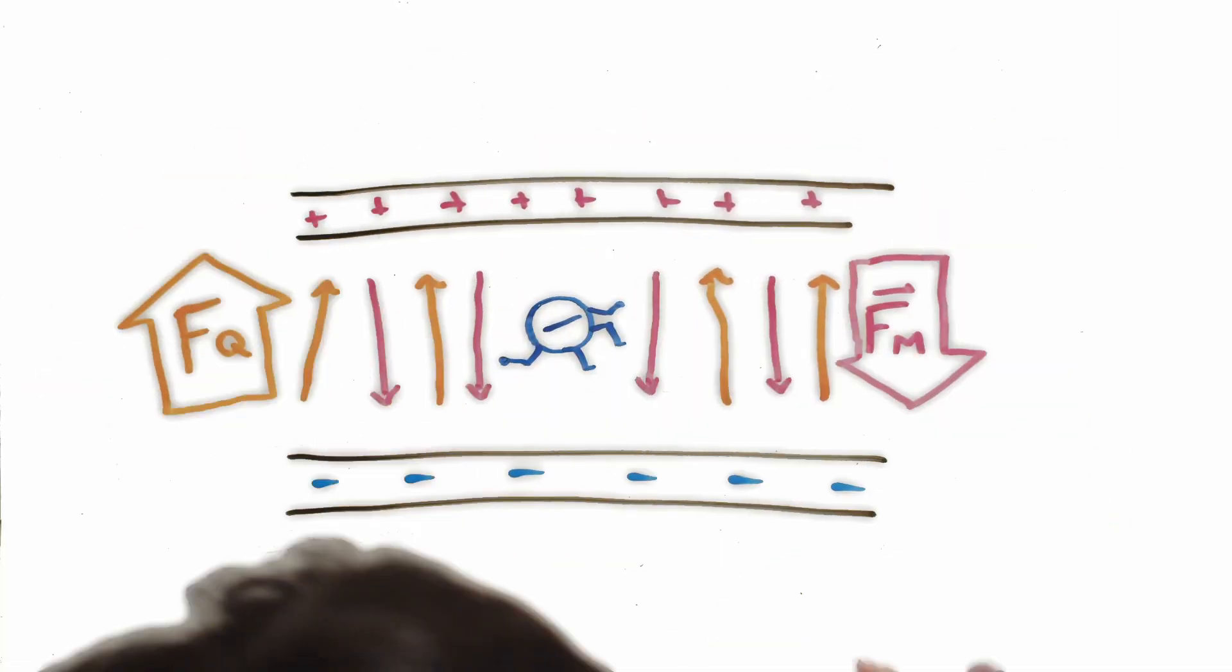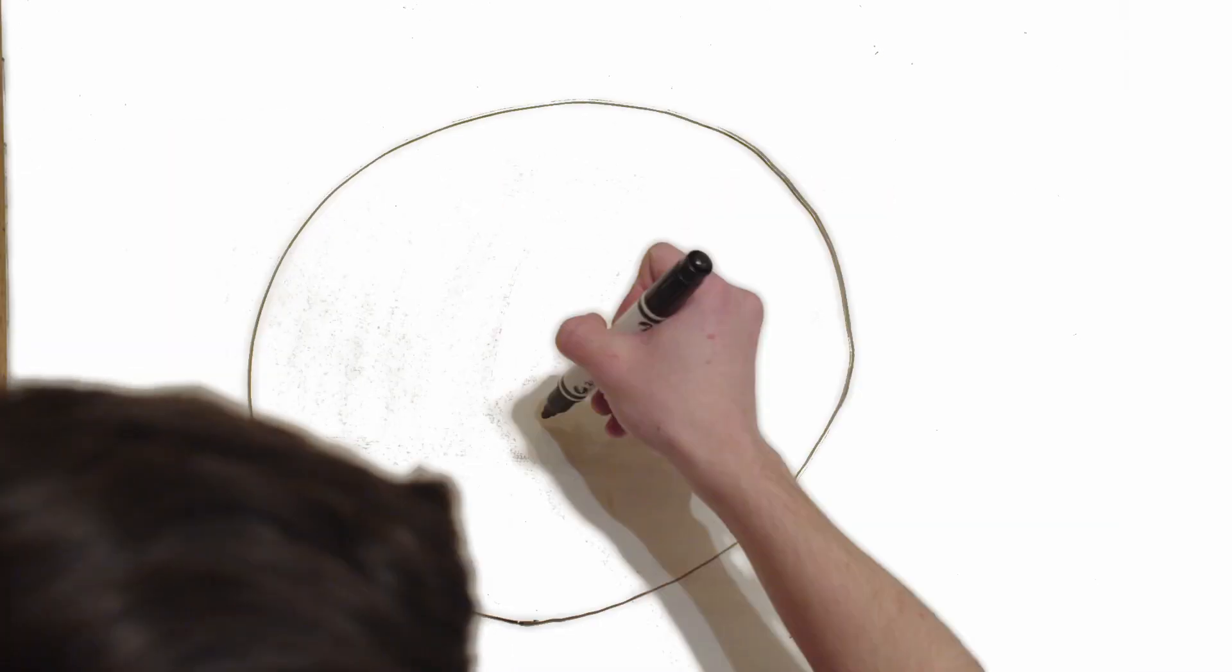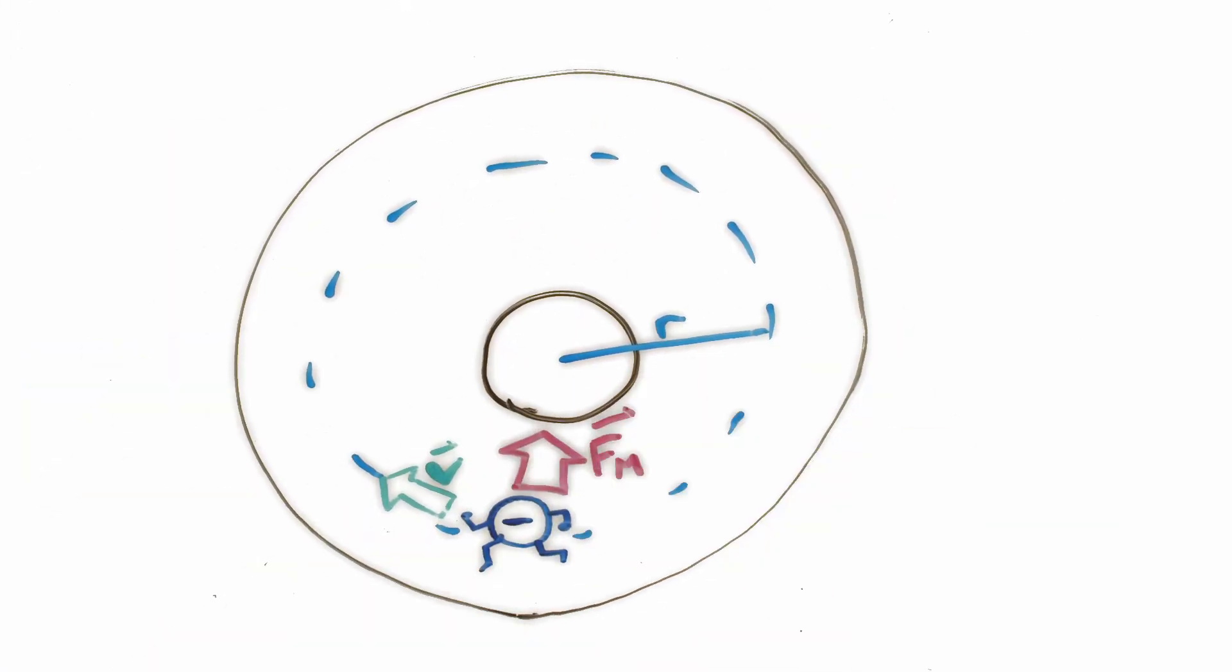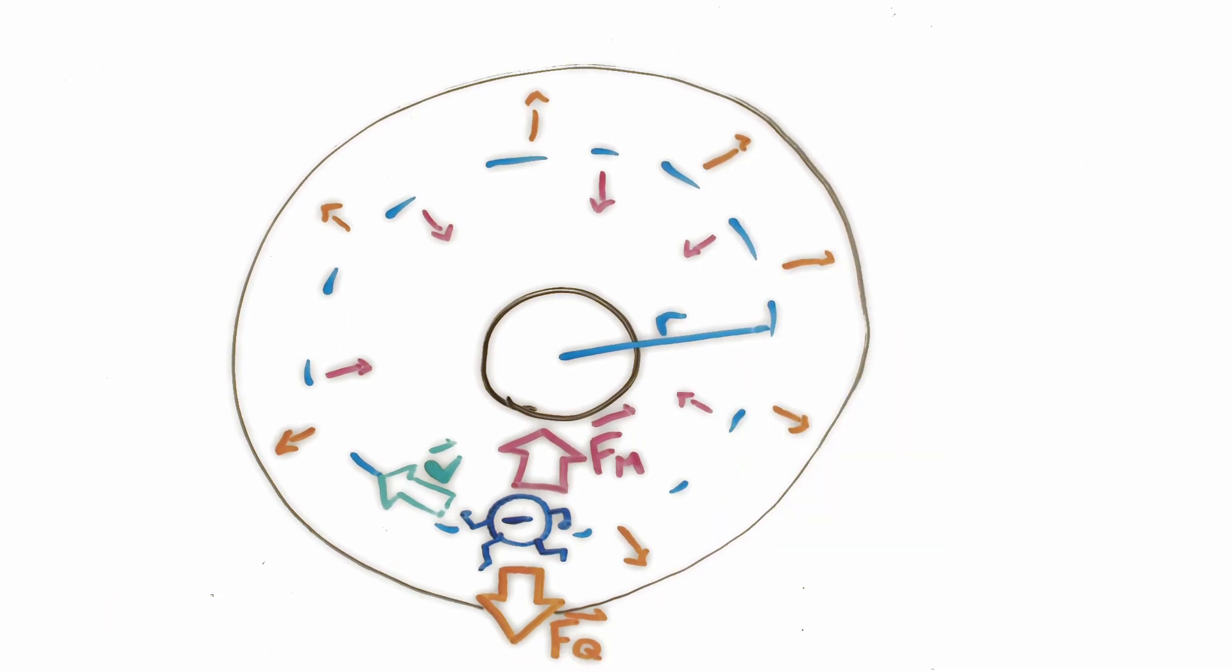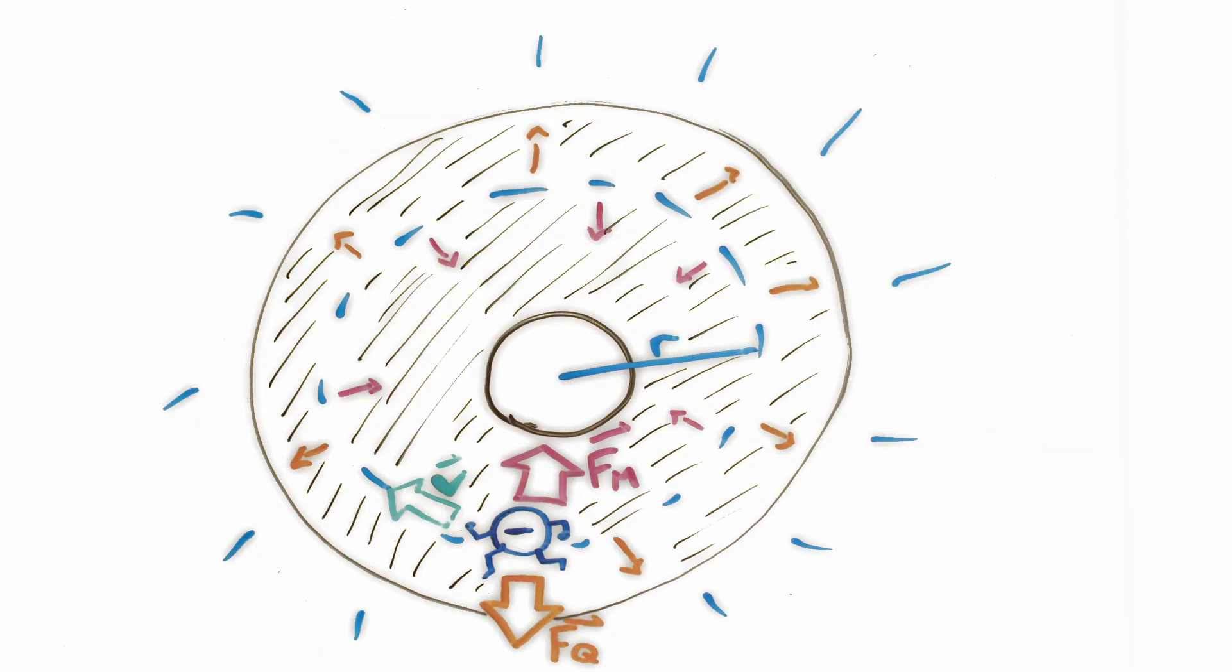This might sound familiar because velocity selectors work using this exact same principle. In these cases, the magnetic field will force the electron inwards, but the stronger electric force over a smaller radius will accelerate the electron back to its original orbit.